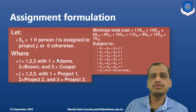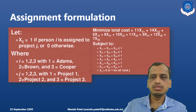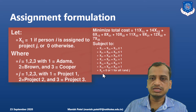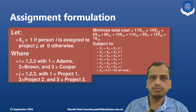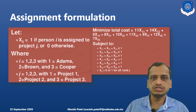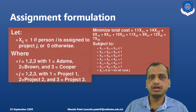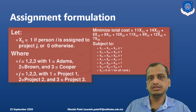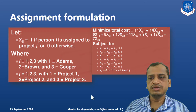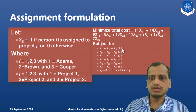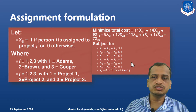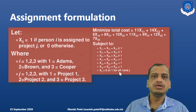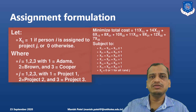When you formulate the assignment problem, the key constraint is that xij equals 0 or 1, meaning only one person can be assigned to one project. This differs from transportation where you have demand and supply constraints. Here, once a person is assigned to a job, they cannot be assigned to any other job. All constraints are written as less than or equal to 1, with xij equal to 0 or 1 for all i and j.